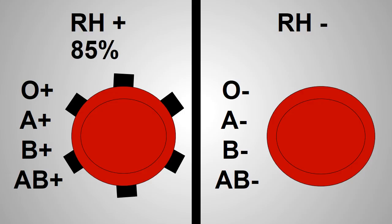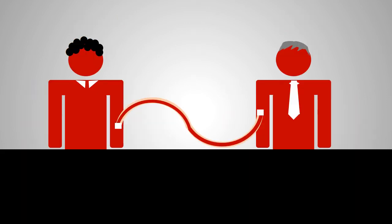About 85% of people are RH positive and about 15% are RH negative. Before any transfusion, it is extremely important that the donor and recipient are compatible in both ABO and RH systems.